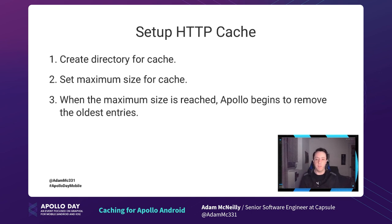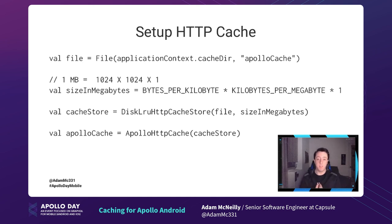Let's look at what code we actually have to write. We start by creating the directory using the application context cache directory and telling it to create a subfolder called Apollo cache. I'm setting my size in megabytes — here it's one megabyte. To get from bytes to megabytes, we do 1024 × 1024 × 1. I like to split that out into constants — bytes per kilobyte times kilobytes per megabyte times the number of megabytes — so it's easier to read.